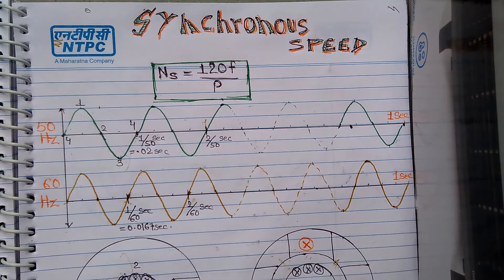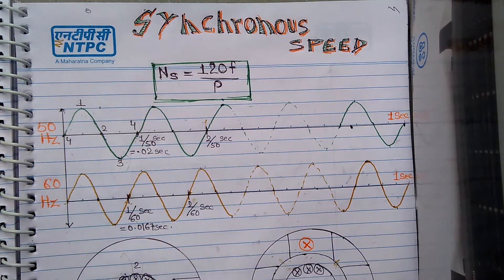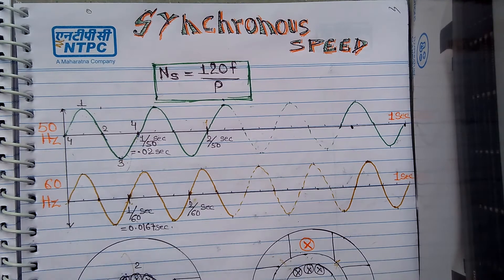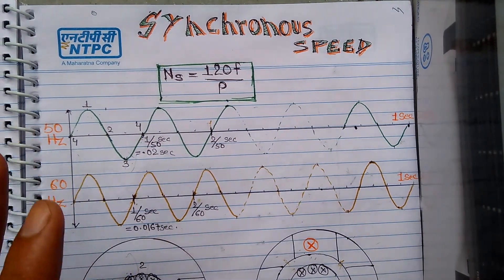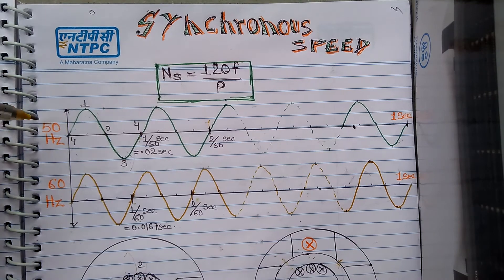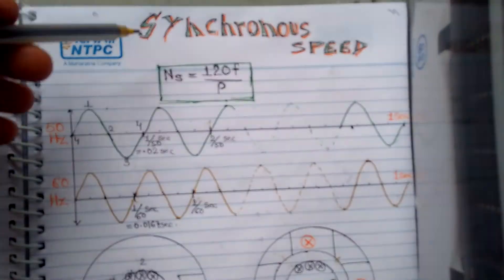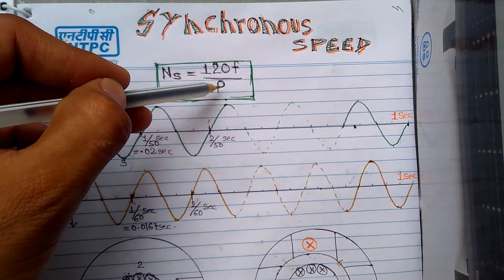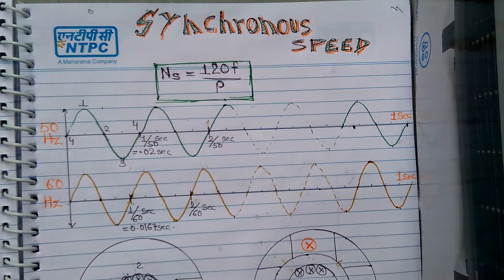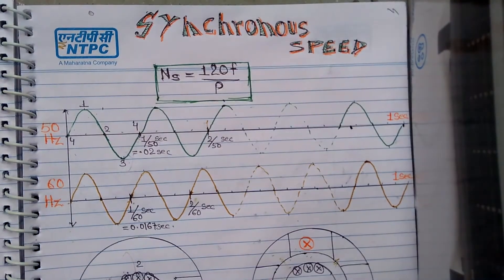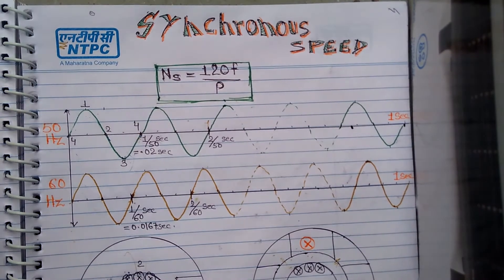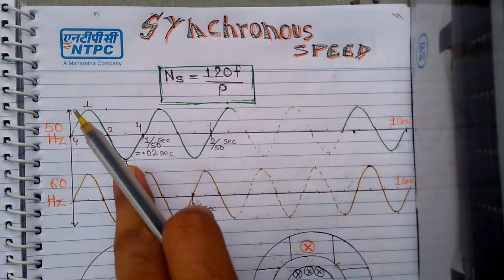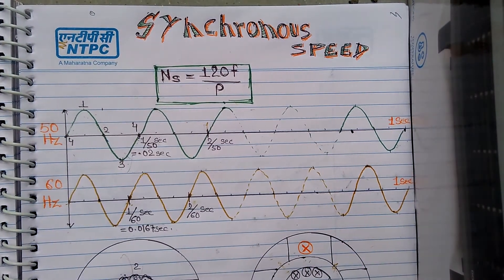So how is synchronous speed realized in a rotating machine? Suppose I have a 50 Hz supply. First we'll try to understand the relation with frequency, and later we'll try to understand the relation with the number of poles. 50 Hz means cycles per second — in one second I have 50 cycles. What does one cycle mean?